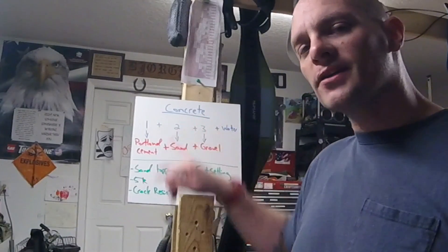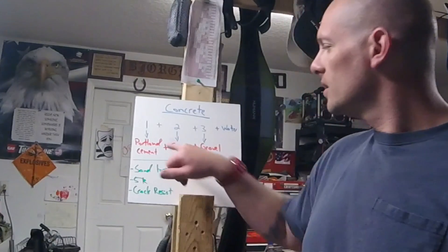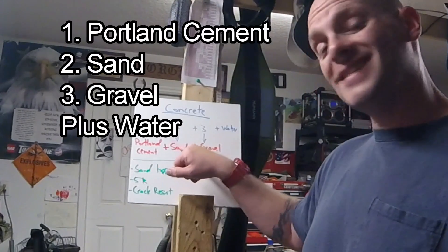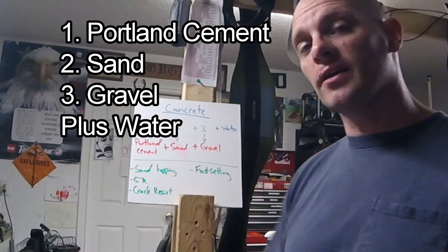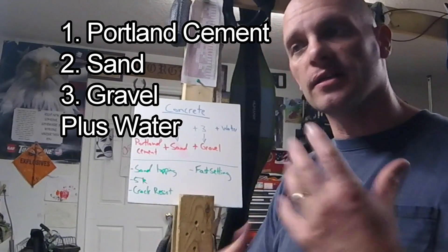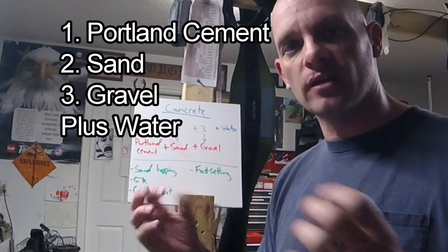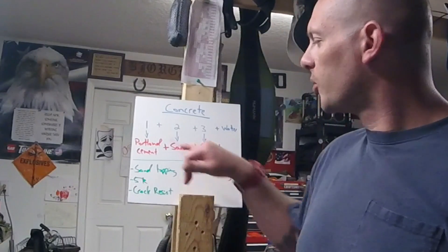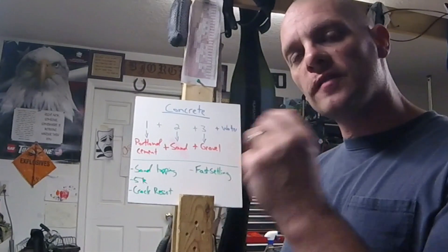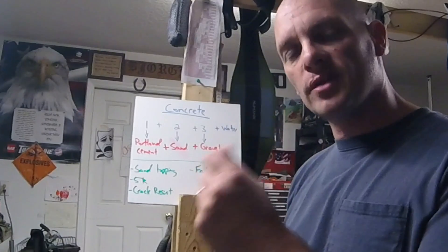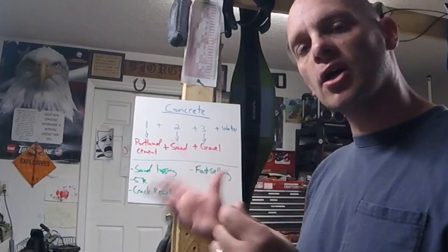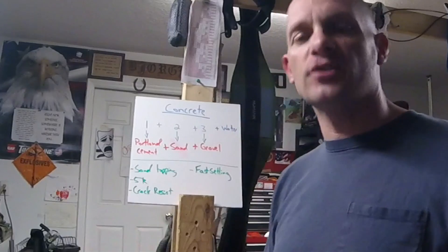Concrete is actually a mix of three things. You got Portland cement, sand and gravel and also water as the chemical agent that starts making the chemical reaction happen.